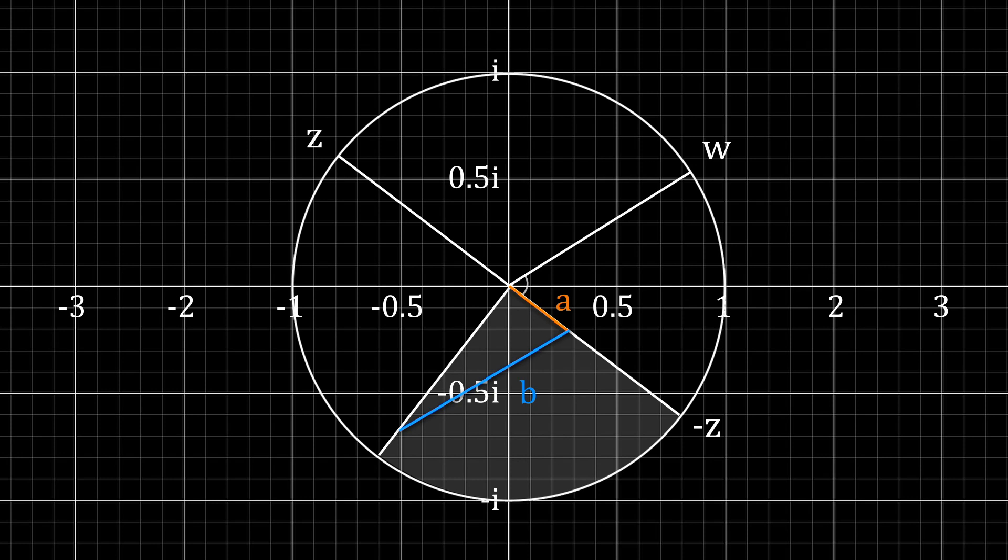This angle here is equal to 180 degrees, or pi, minus the argument of z divided by w, and through alternate angles, this angle is also equal to pi minus the argument of z divided by w. Now doesn't this seem familiar?